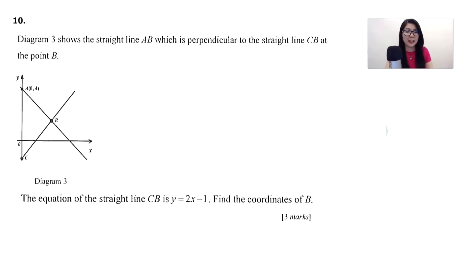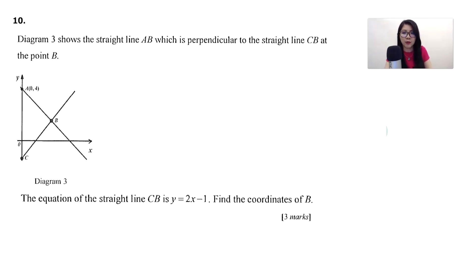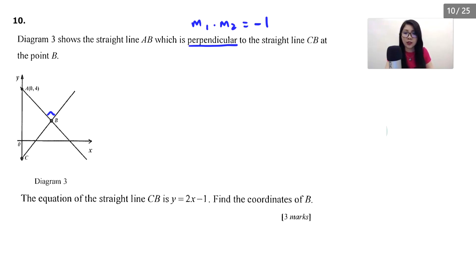Let's look at question number 10. This chapter is coordinate geometry — they ask for coordinates and there is an equation of a straight line with the word perpendicular. Diagram 3 shows straight line AB which is perpendicular to straight line CB. Perpendicular means 90 degrees, so we use the formula m₁ × m₂ equals negative 1. The equation of straight line CB is y equals 2x minus 1, so from here the gradient m₁ equals 2.